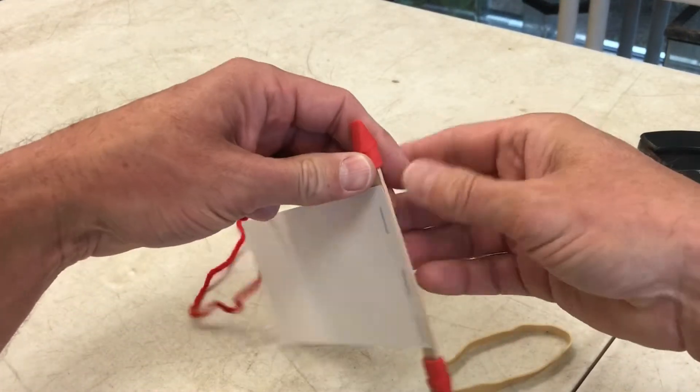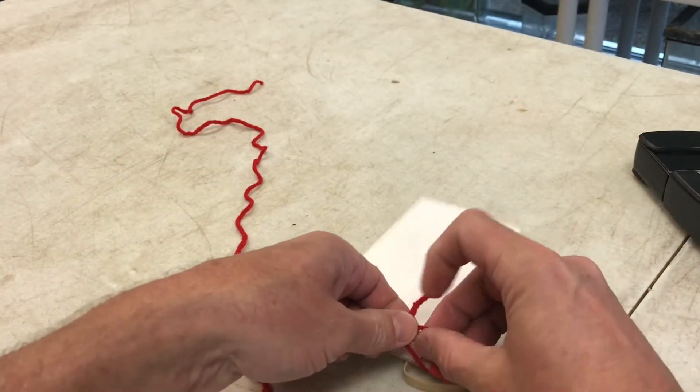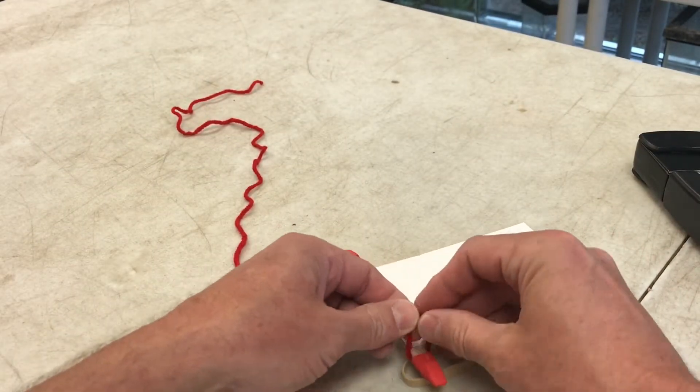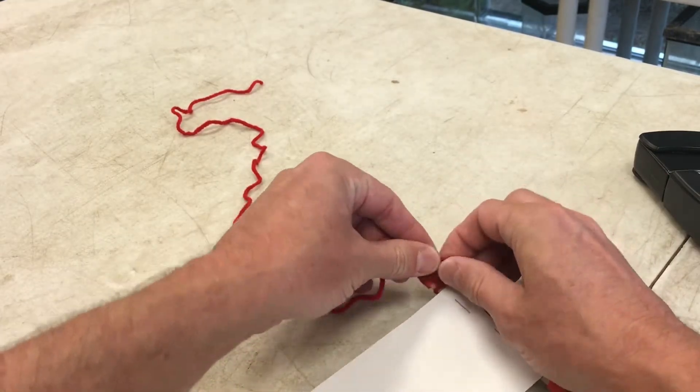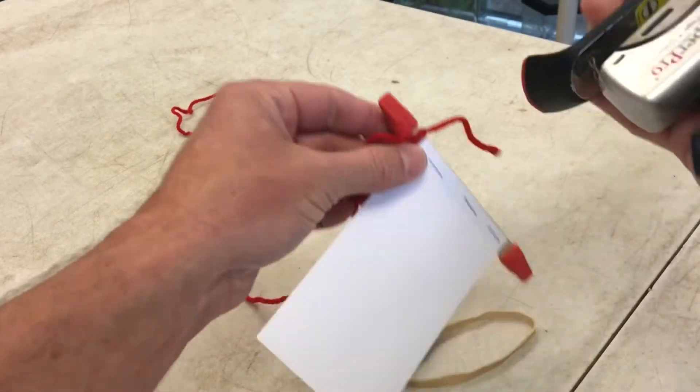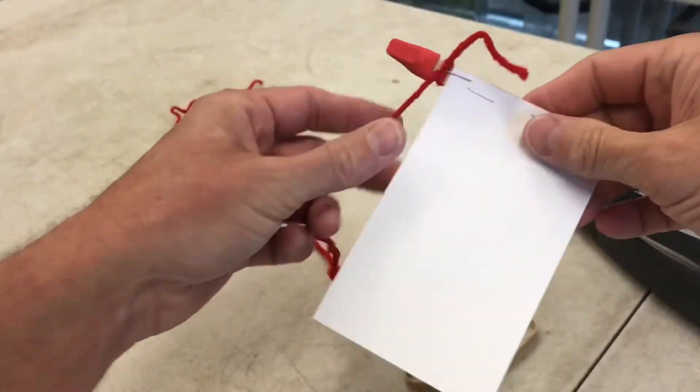I like to just tie one at the end of our string, and the length of our string doesn't have to be specific, maybe two or three feet. And I like to go ahead and just throw another staple in it to keep it from flying off.